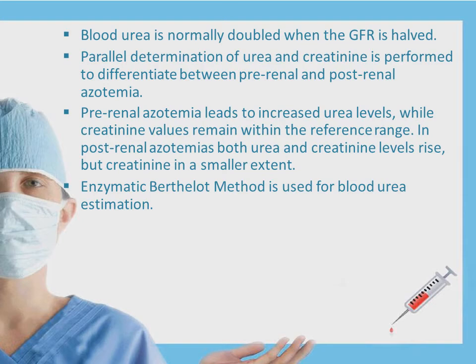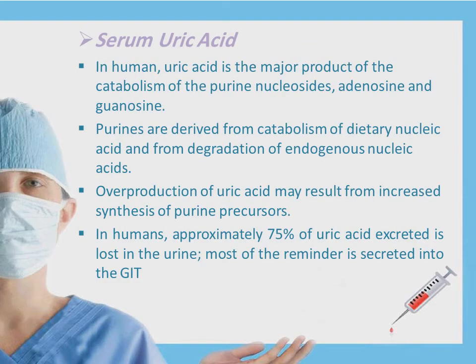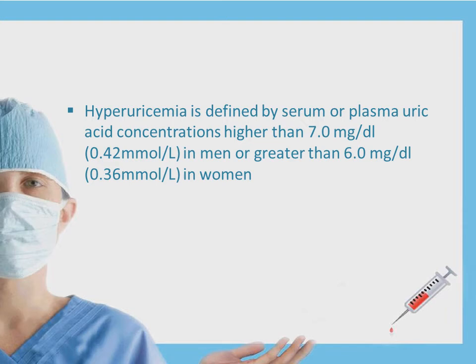The enzymatic UV method is the principal experiment used to estimate urea level. Serum uric acid is another biomarker used for diagnosis or estimation of kidney condition. Uric acid is the major product of the catabolism of purine nucleosides adenosine and guanosine. It is derived from catabolism of dietary nucleic acid and from degradation of endogenous nucleic acid. Overproduction of uric acid may result from increased synthesis of purine precursors. In humans, approximately 75% of uric acid being secreted is lost in the urine, and most of the remainder is secreted into the gastrointestinal tract. Hyperuricemia is defined by serum or plasma uric acid concentration higher than 7 mg/dL.